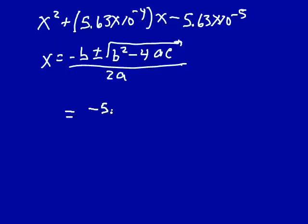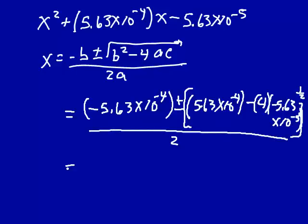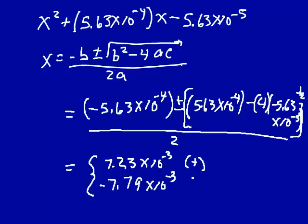So this would be minus b minus 5.63 times 10 to the minus 4th, plus or minus square root of b squared, which is 5.63 times 10 to the minus 4th, minus 4 times a, which is 1, times c minus 5.63 times 10 to the minus 5th. And this is all the square root here. Divided by 2 times a, a is 1, so this would be divided by 2. And we do this in our calculators. We get two roots. The first root is 7.23 times 10 to the minus 3 in our calculators. That's the plus root where we take that plus. The other one is minus 7.79 times 10 to the minus 3. That's the minus root.